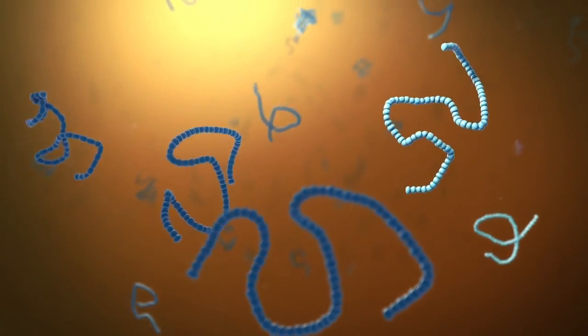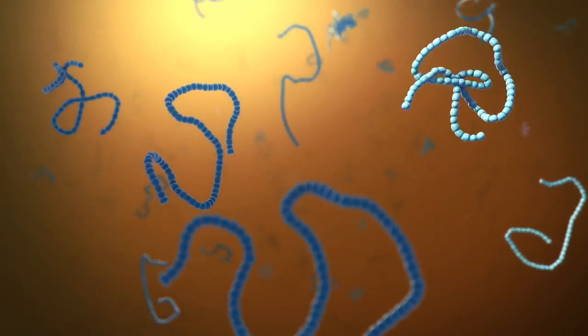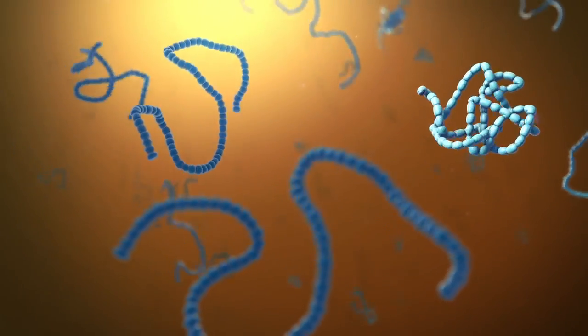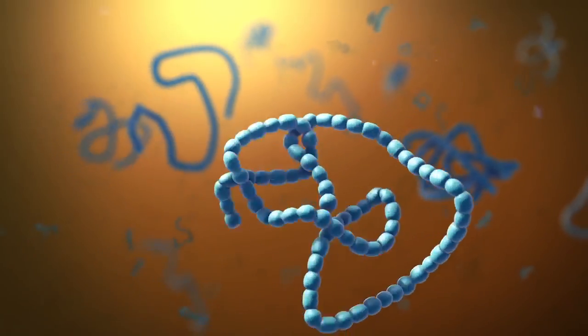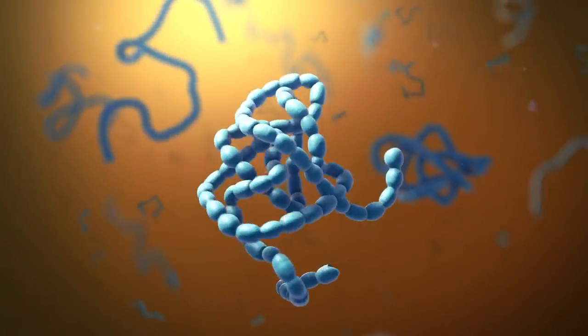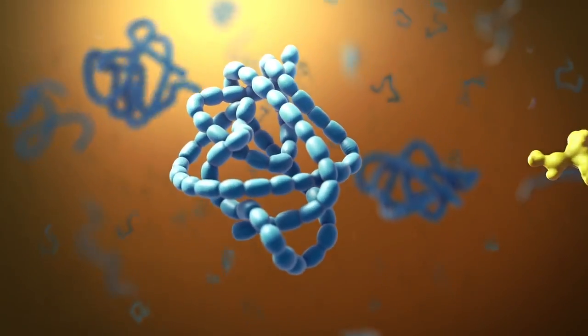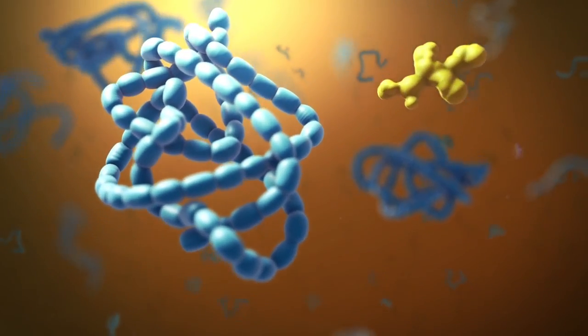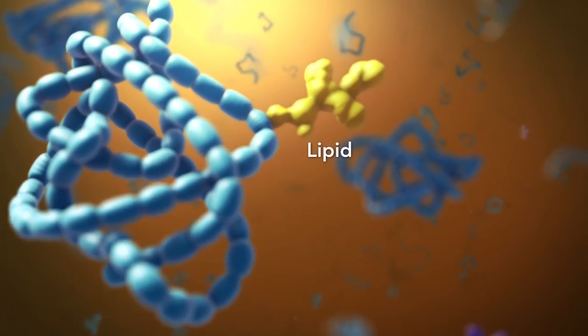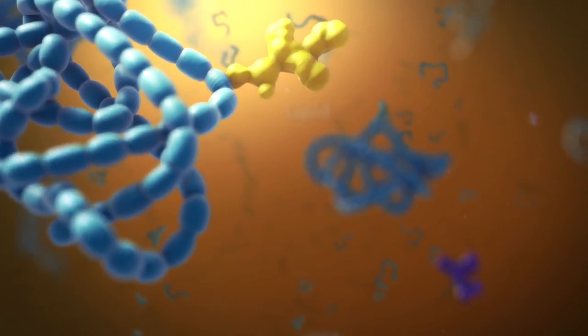As proteins move through the Golgi body, they're customized into forms that the cell can use. The Golgi body does this by folding the proteins into usable shapes or adding other materials onto them, such as lipids or carbohydrates.